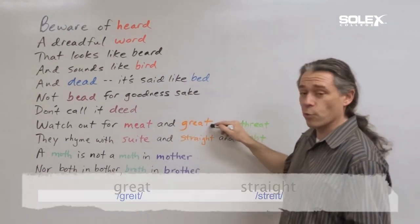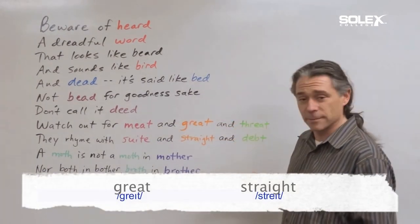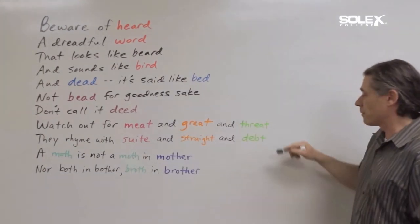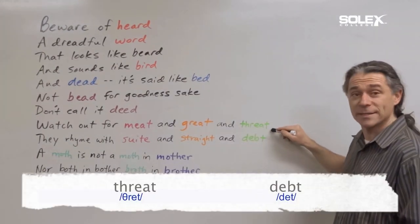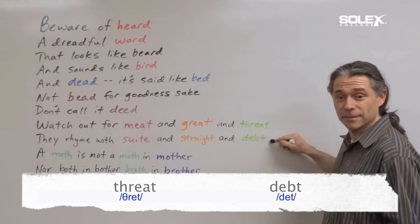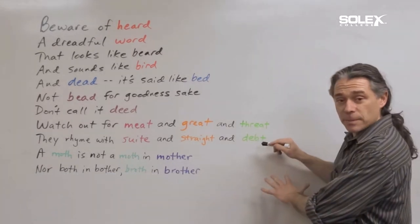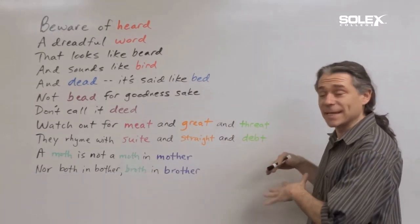Look at these two, great and straight. Over here we have threat and debt. You do not pronounce the B sound, it's silent. Debt.